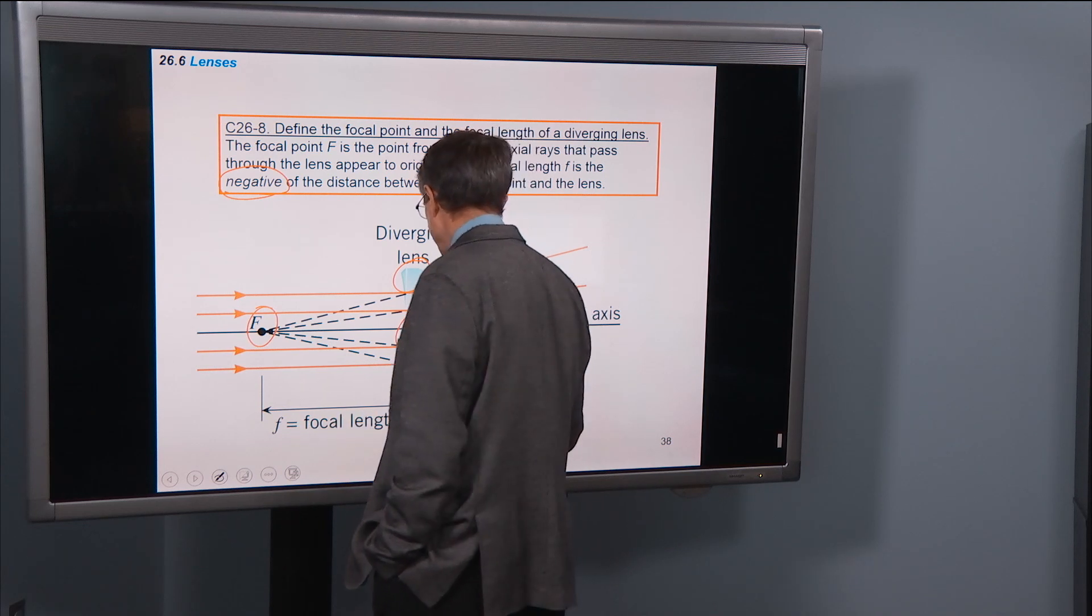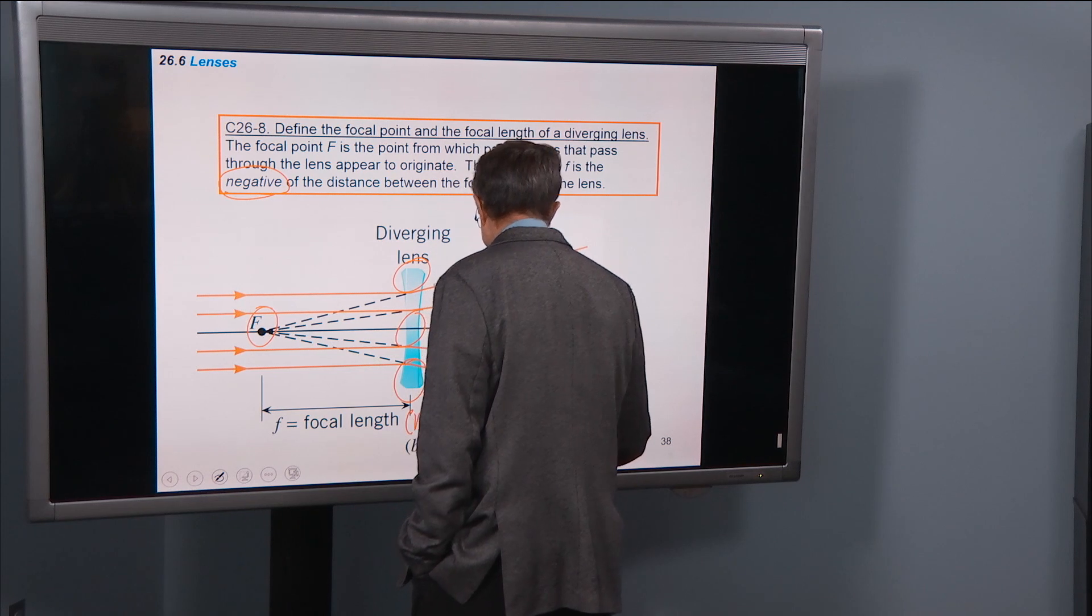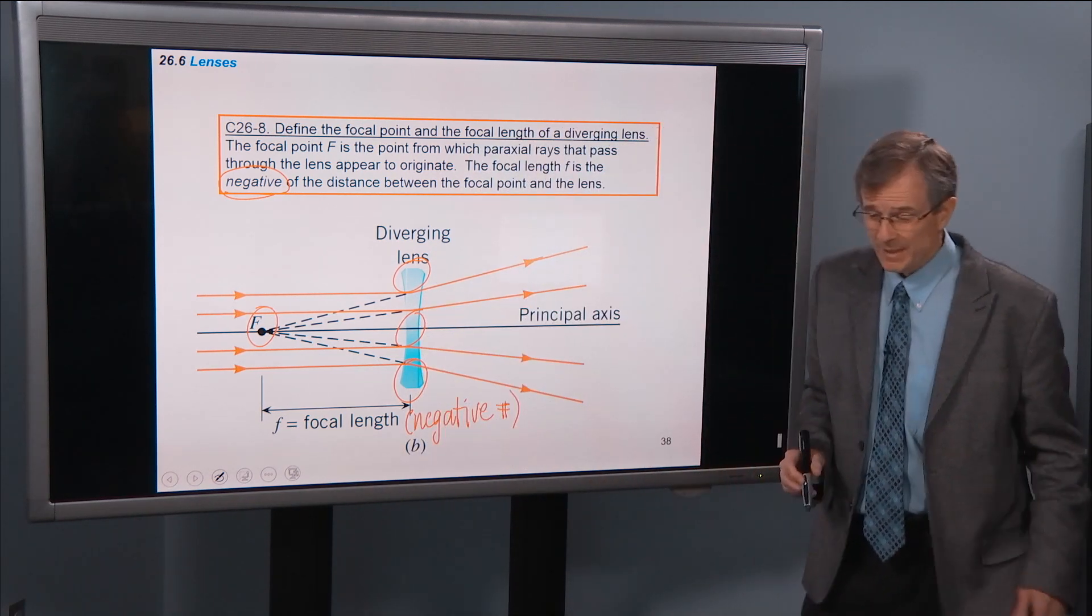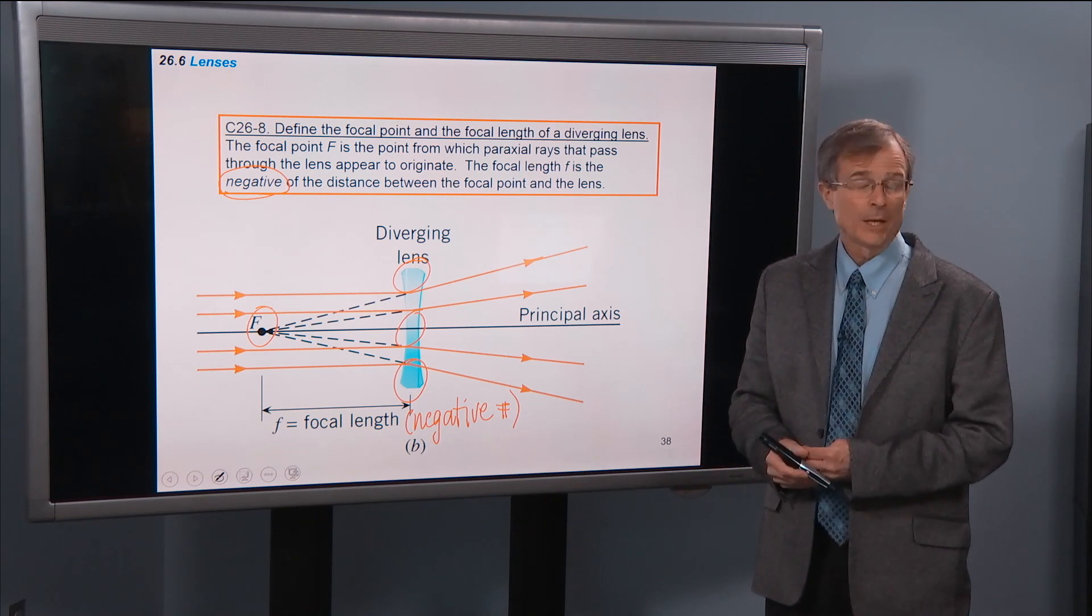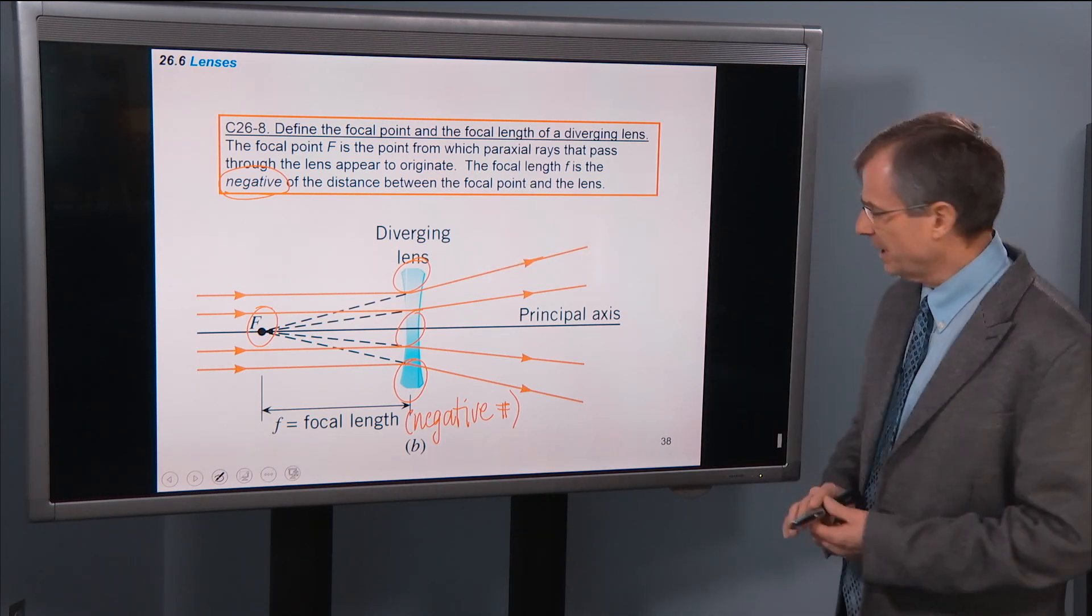So it's actually negative. Why? Just like in the last chapter, it makes the math come out a whole lot easier if you just define it to be a negative number for a diverging lens.